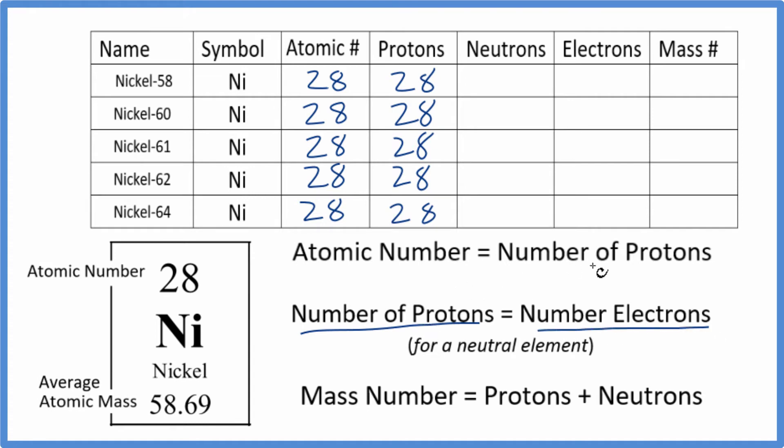They're neutral because the number of protons equals the number of electrons. Protons are positive. Electrons are negative. They balance out. They give us a neutral compound. So the number of protons in a neutral compound, like Ni, equals the number of electrons. So again, 28.